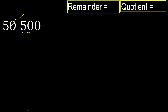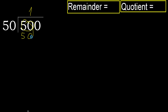50 multiplied by which number is nearest to 50, but not greater. 50 multiplied by 2 is 100, which is greater. Multiplied by 1, 50 is not greater. Subtract: 50 minus 50 equals 0.